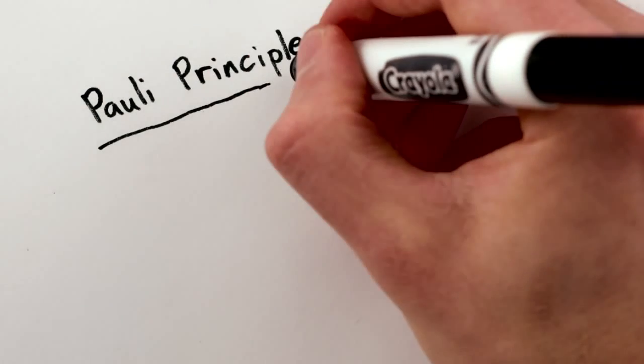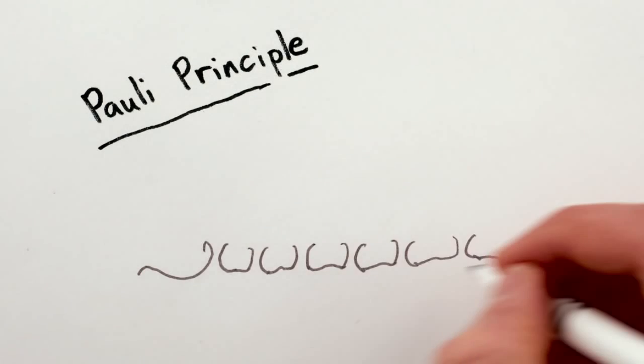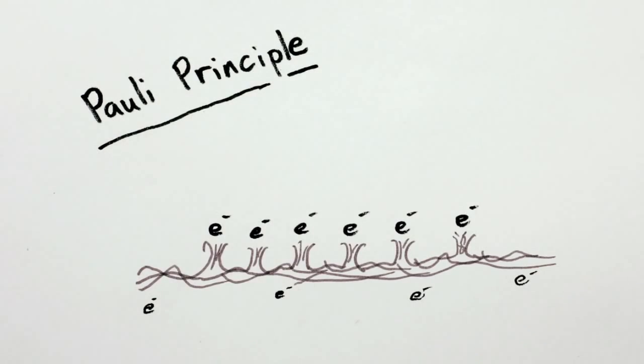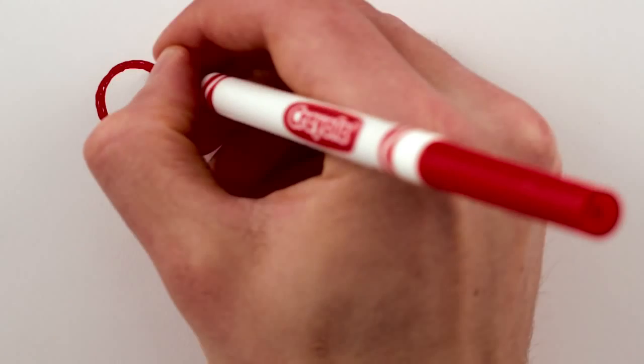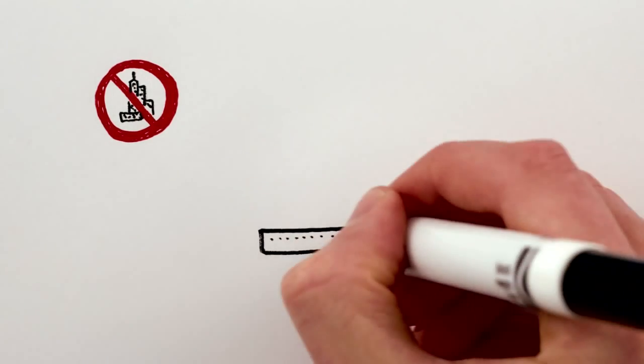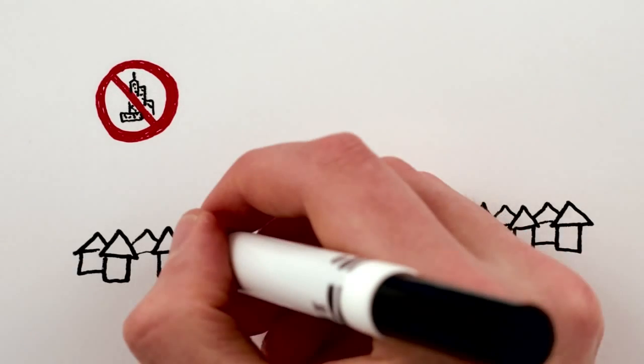This is called the Pauli Exclusion Principle, and what it means in practice is that you can't cram too much matter into the same place. Like a city where building higher than one story is prohibited, instead of skyscrapers, compounds sprawl outwards.